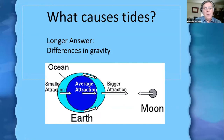So on those two sides where the bulge is greatest, we have high tides. In between the two high tides, there is a point where the bulge is narrowest, and that's where you have low tides.